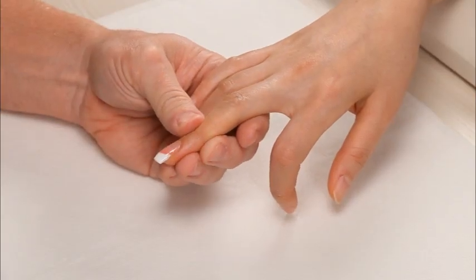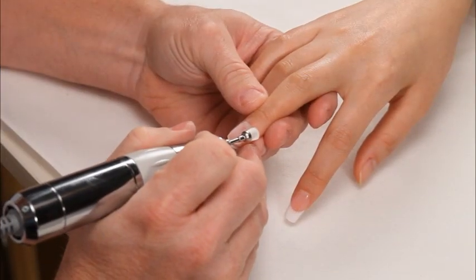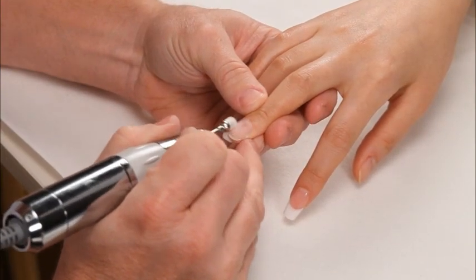This is a way to make a quick and easy smile line. I'm going to use the dust buster to remove any dust or debris off the natural nail plate.